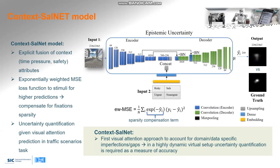Our architecture introduces a concatenation layer between the encoder and decoder that introduces context information. Ground-truth saliency maps in pedestrian attention prediction are much more sparse, only containing few non-zero entries. To account for this, we extend the mean square error loss by exponentially weighting it with the magnitude of the prediction, which penalizes high predictions less.